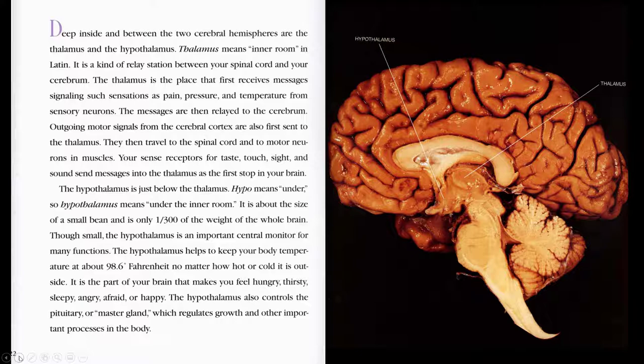The hypothalamus is just below the thalamus. Hypo means under, so hypothalamus means under the inner room. It is about the size of a small bean and is only one three-hundredth of the weight of the whole brain. Though small, the hypothalamus is an important central monitor for many functions. The hypothalamus helps to keep your body temperature at 98.6 degrees Fahrenheit, no matter how hot or cold it is outside. It is the part of your brain that makes you feel hungry, thirsty, sleepy, afraid, angry, or happy. The hypothalamus also controls the pituitary, or master gland, which regulates growth and other important processes in the body.